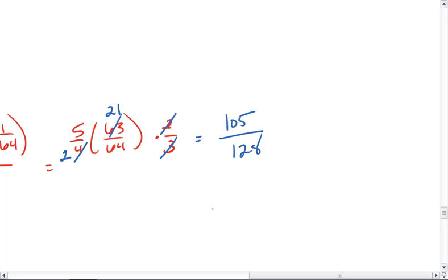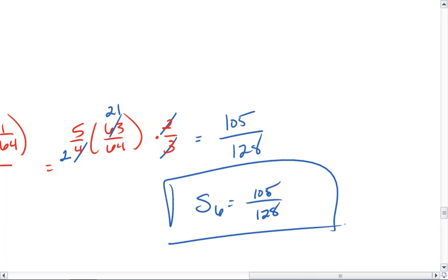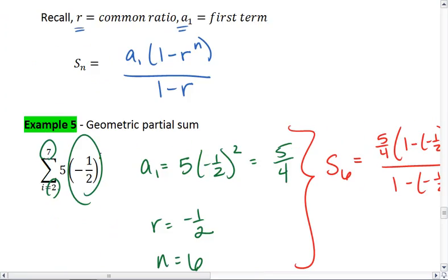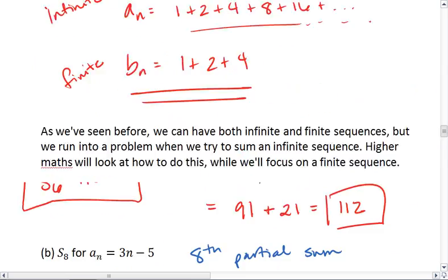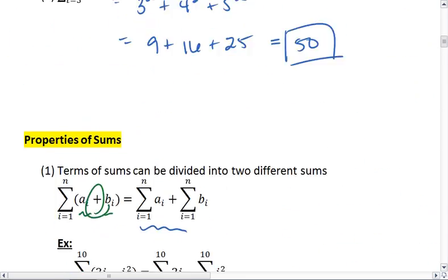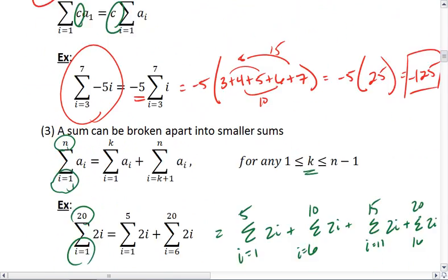Thus, my sixth partial sum is 105 over 108. And you can write this in a decimal form if you want to, or leave it as a fraction, and yes, this should be 128, not 108. And that's it. I know that seems like a lot, but what you really just need to make sure you've got down is that you understand what sums are in general, and then you know how to find partial sums.